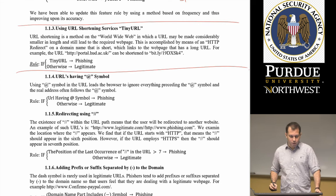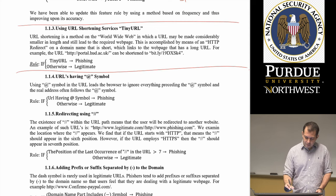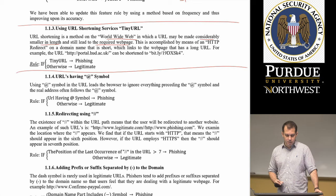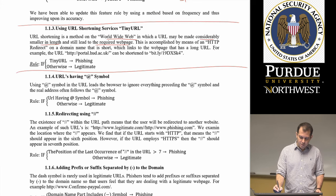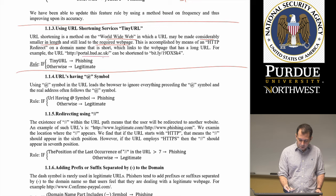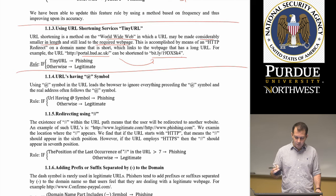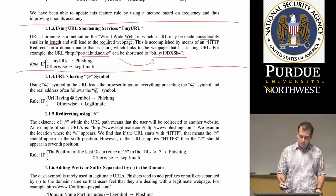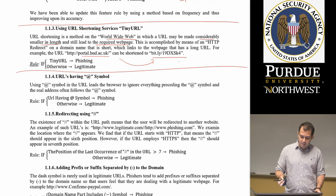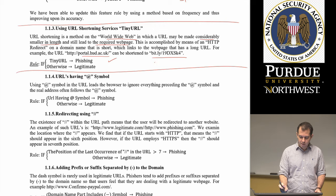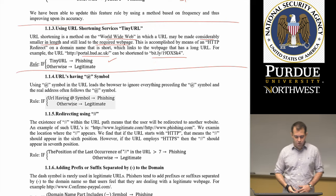The next feature is using URL shortening services such as TinyURL. URL shortening is a method on the web where a URL may be considerably smaller in length but still leads to the required web page, accomplished via a redirect. For example, a university's full website URL can be shortened to a compact format. They're not saying this is necessarily a phishing website — just that it's suspicious, so they mark it in the feature set and let the machine learning algorithm figure it out.